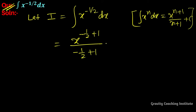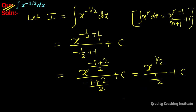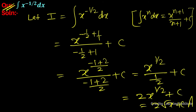Taking LCM: we get 2 minus 1 is 1, so the exponent becomes 1 upon 2. Equal to x to the power 1 upon 2 upon 1 upon 2 plus c. So equal to 2x to the power 1 upon 2 plus c. Therefore the answer is 2 root x plus c.